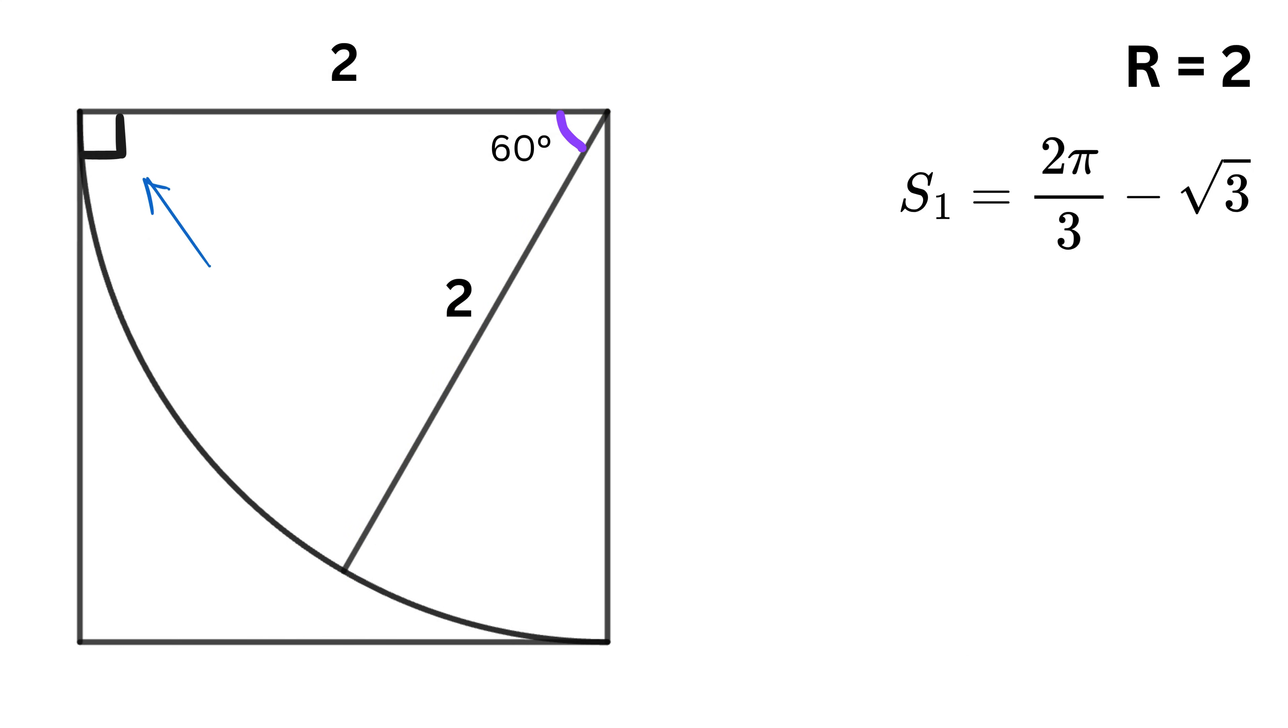Now here comes the magic. A square's corner angle is 90 degrees. We already used 60 degrees for the equilateral triangle, so the remaining angle in that corner is 90 degrees minus 60 degrees, which equals 30 degrees.